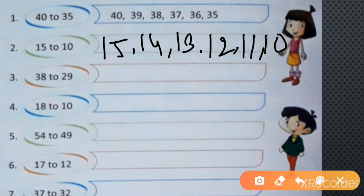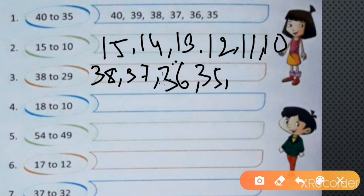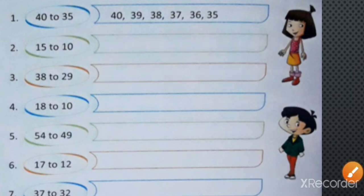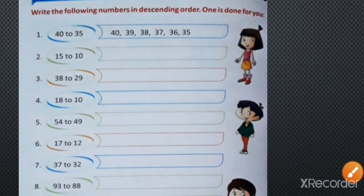38 to 29. You have to start with 38, then 37, 36, 35, 34, up to 29. In this way you have to complete the remaining.